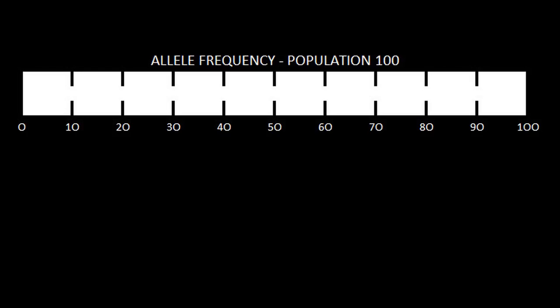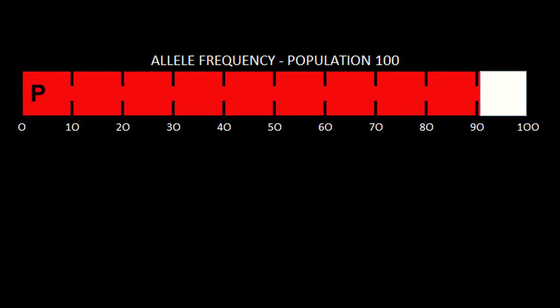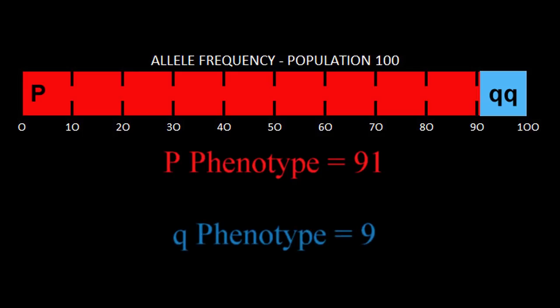In a given population with a dominant P trait and a recessive Q trait, we can determine all members that have the P allele by simply counting the members expressing the P trait known as the P phenotype, in this case 91. We can also determine all members with two Q alleles by counting the number of members expressing the Q phenotype, in this case 9.